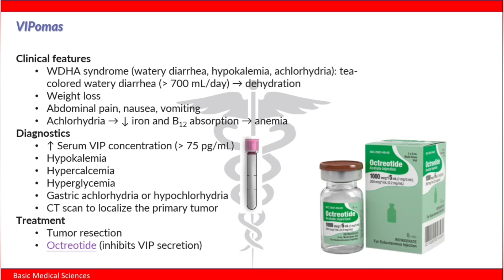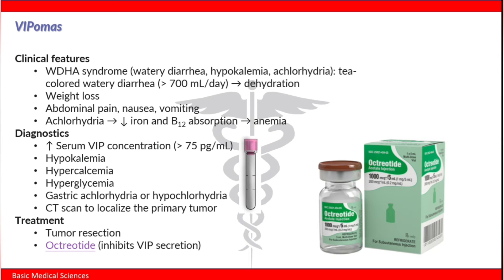CT scan can help to localize the primary location of the tumor. Treatment: we can do tumor resection if it is operable. We can also give an analog of somatostatin called octreotide, which can help to inhibit vasoactive intestinal polypeptide secretion.